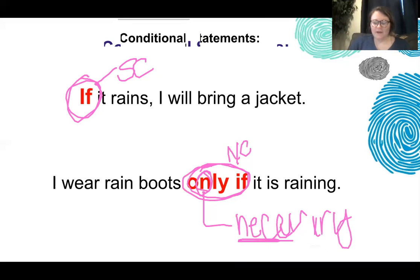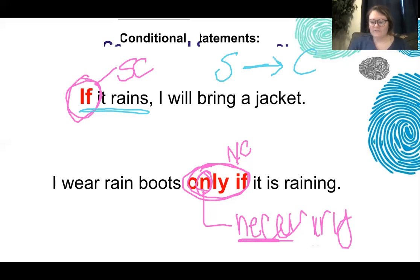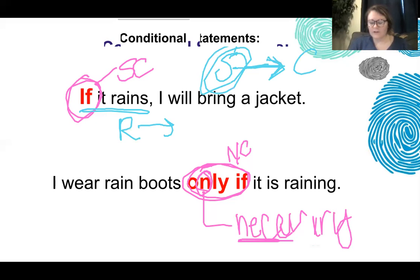For example: if it rains, I will bring a jacket. 'If' introduces our sufficient condition, and sufficient goes on the left side of the arrow — it triggers what follows. So if it's raining, I will for sure bring a jacket.